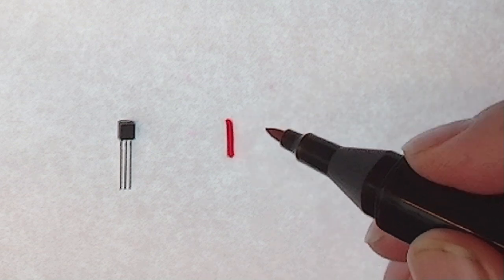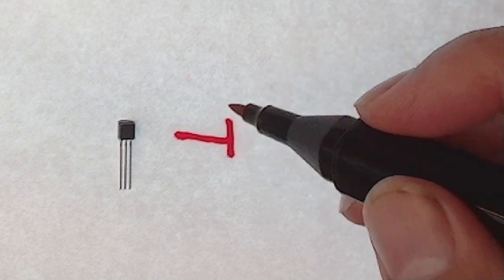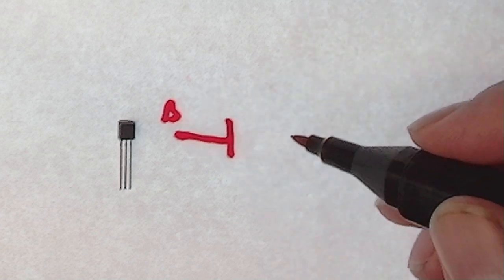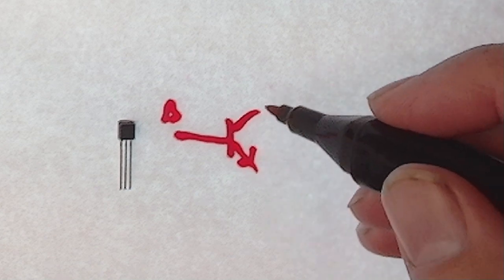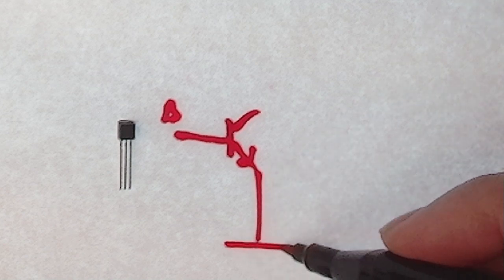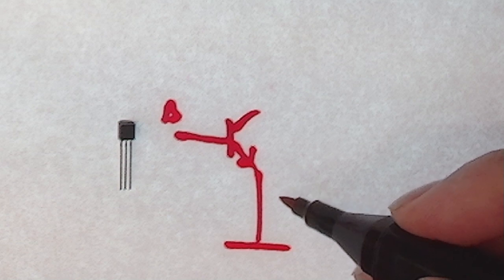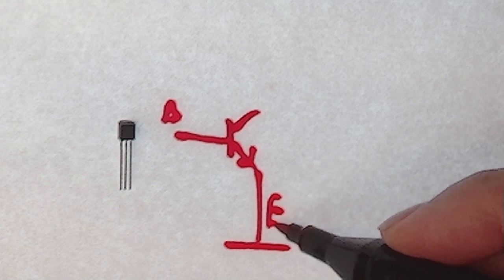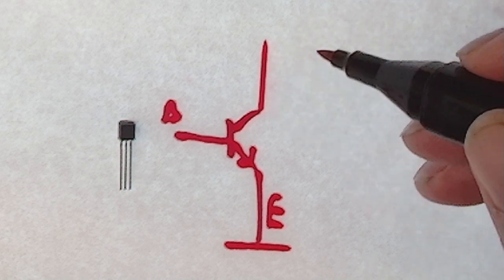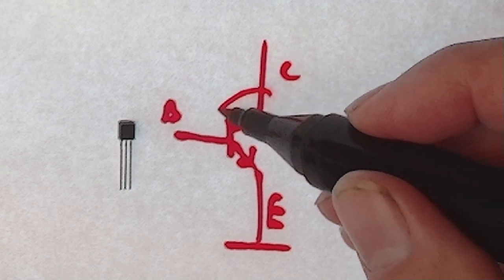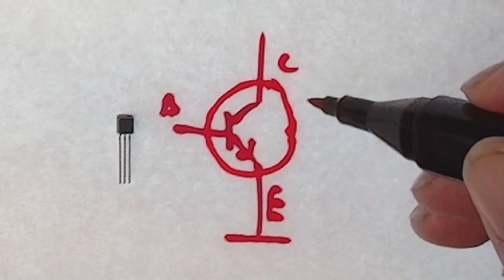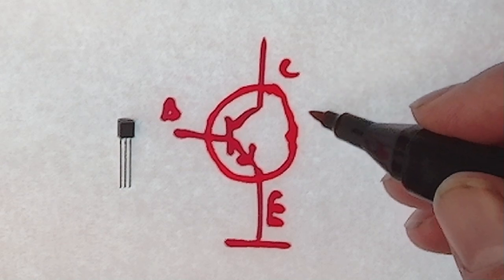Now the schematics for the NPN transistor is as follows. We start with the base, we go to the emitter, and we have the collector here. So this is our NPN.